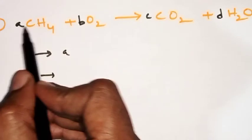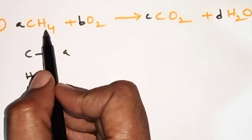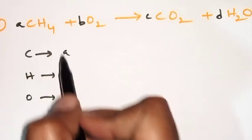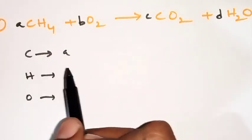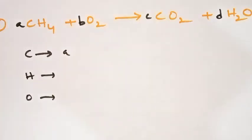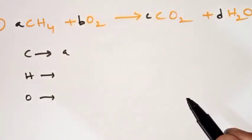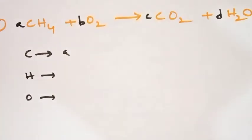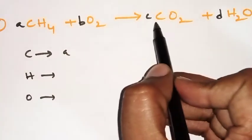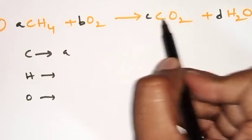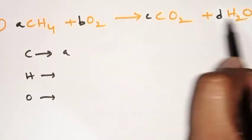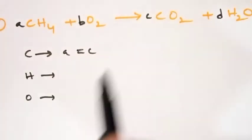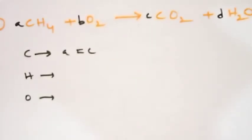Because we considered 'a' moles of CH₄, the left side carbon atoms must equal the right side carbon atoms. On the right side of CO₂ there is one carbon atom, and in H₂O there is no carbon atom. Therefore: a = c. This is our first equation.